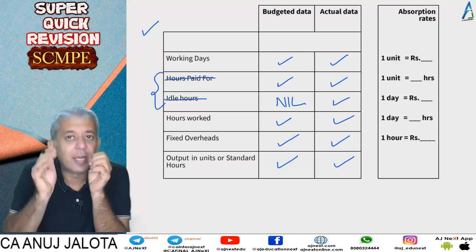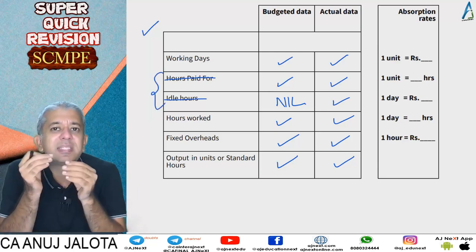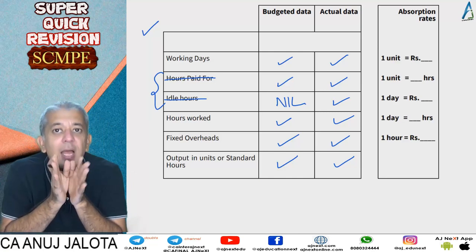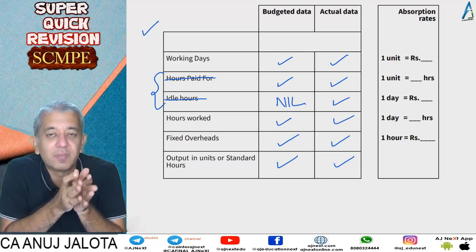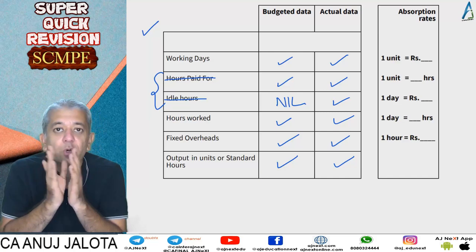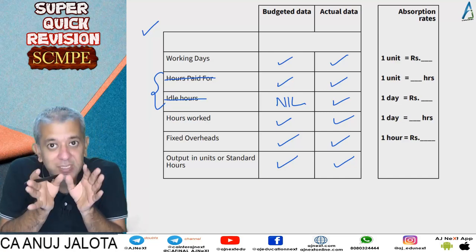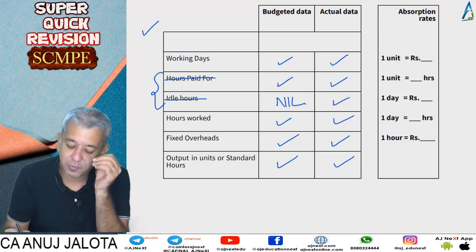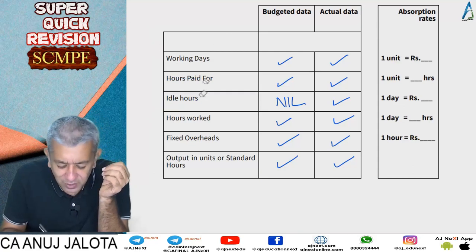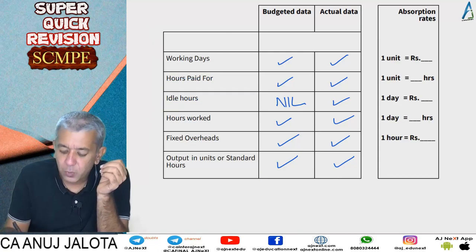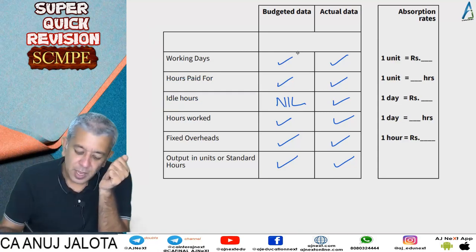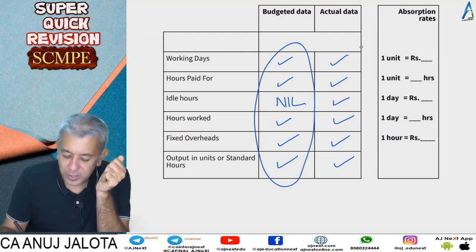Some people do not take idle hours while calculating fixed overheads. If you do that, your job will be slightly faster because you will not compute idle time variance, though some other variances will also change. In class, we always take hours paid for and idle hours — it's a better approach because everything gets accounted for.